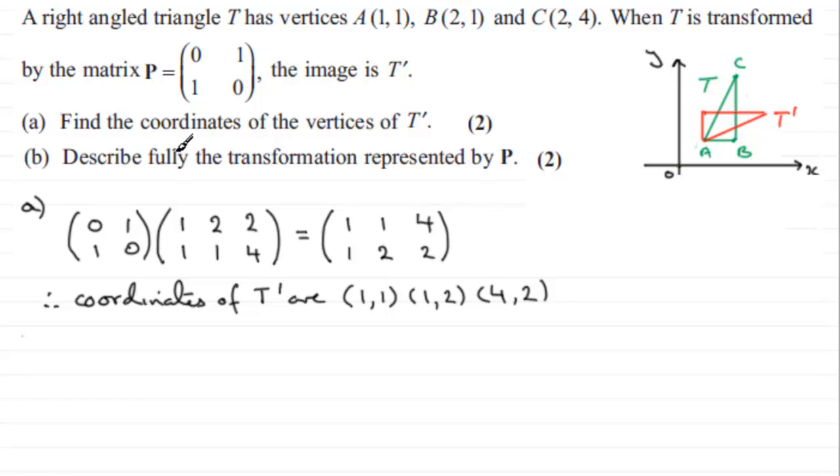Okay, now for part B, it says describe fully the transformation represented by P. And if you drew the sketch here, let's hope we could see straight away that it represents a reflection in the line y equals x. So for part B then, we could say that P represents a reflection in the line y equals x.